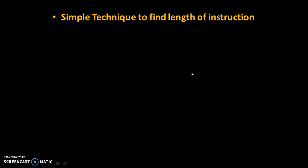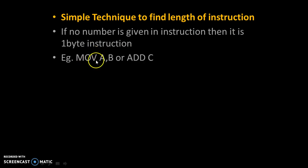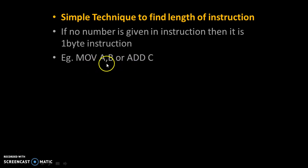Now let's understand a simple technique to find the length of an instruction. If no number is given in the instruction, then it is a 1-byte instruction. For example, in both these instructions, no number is given, so we can say that these two instructions are 1-byte instructions.